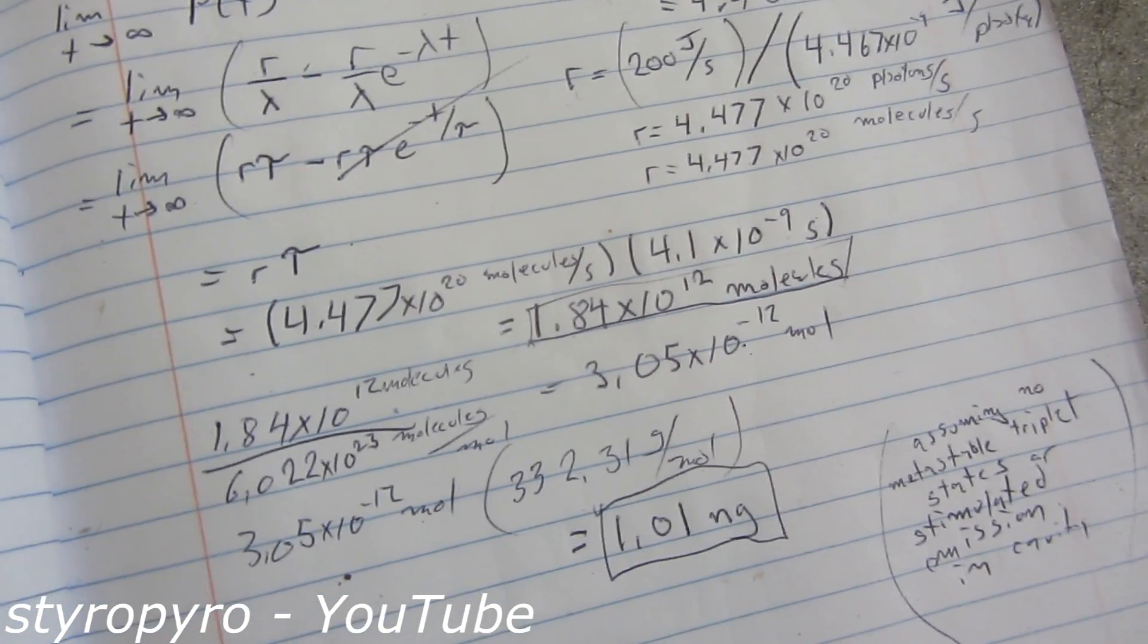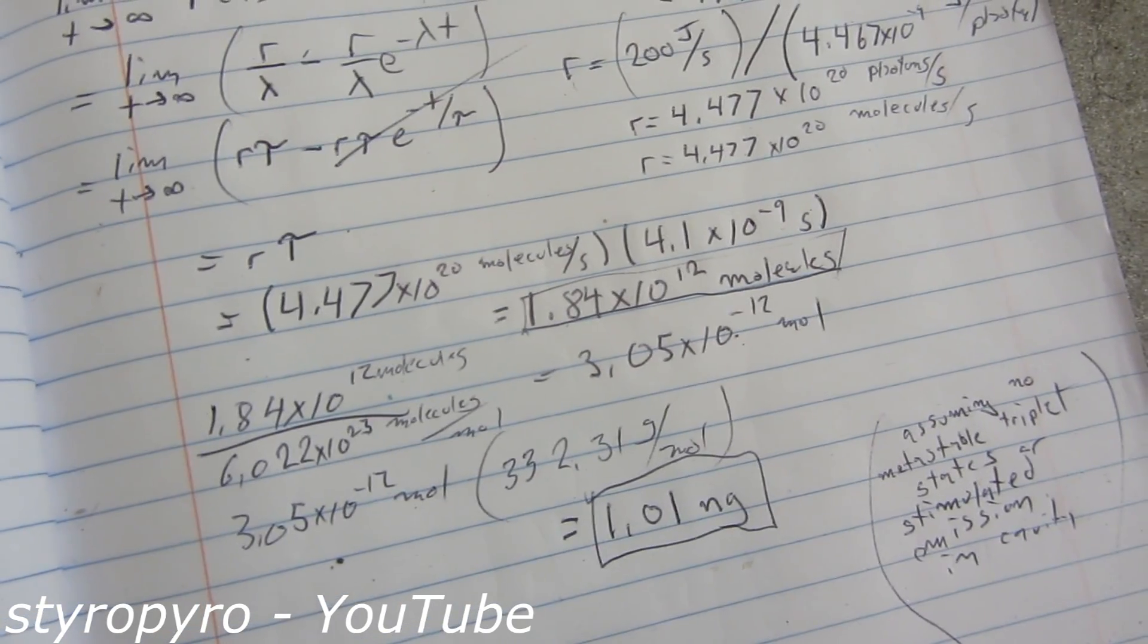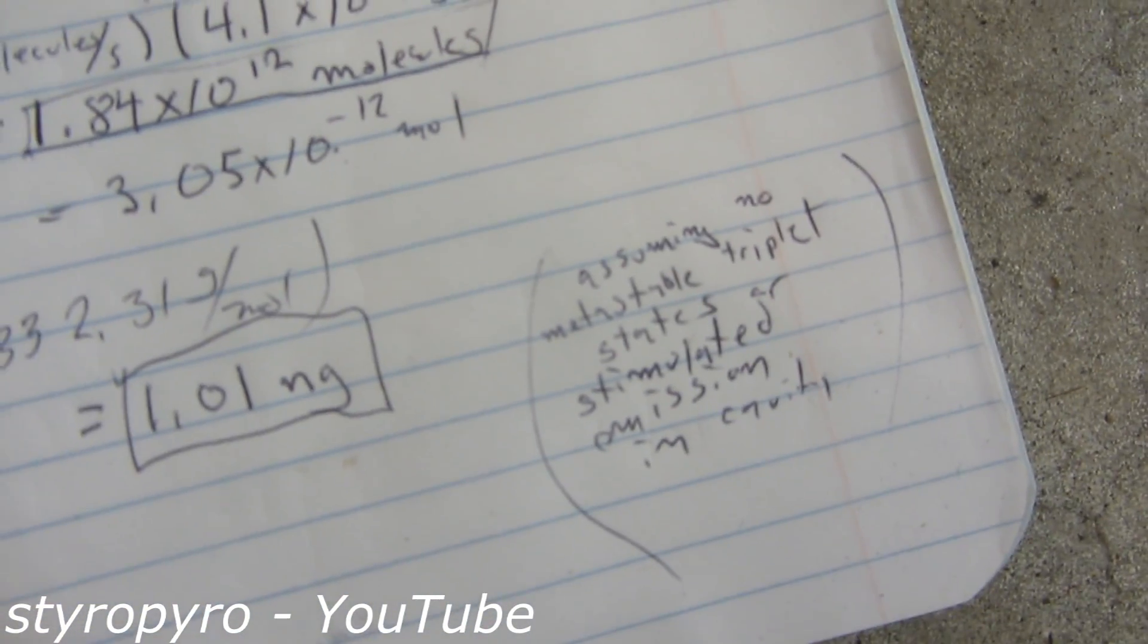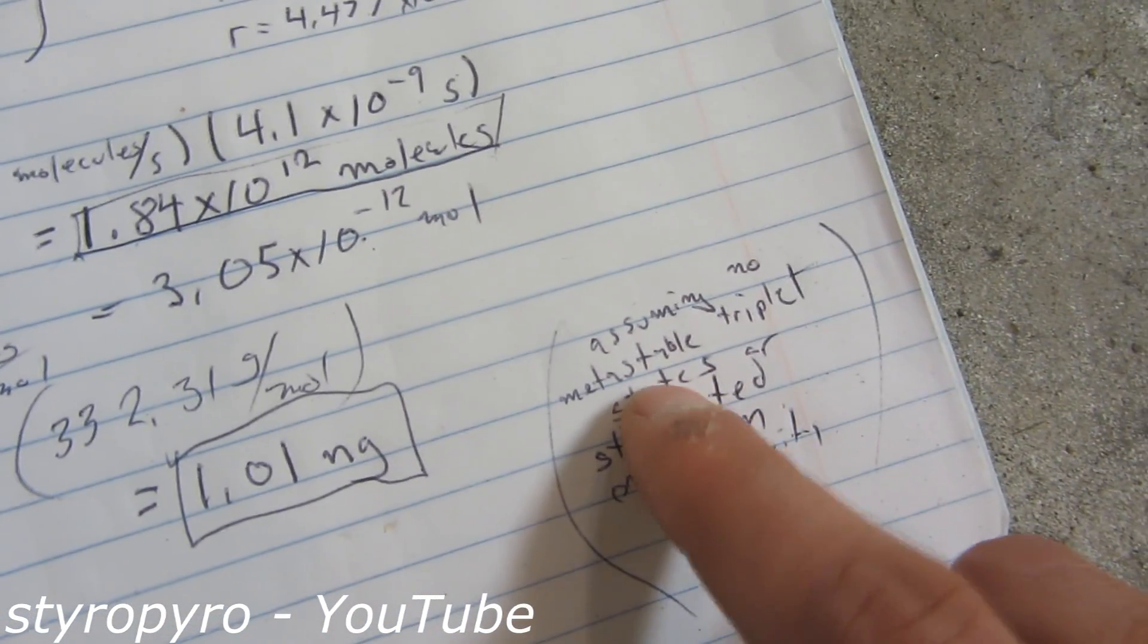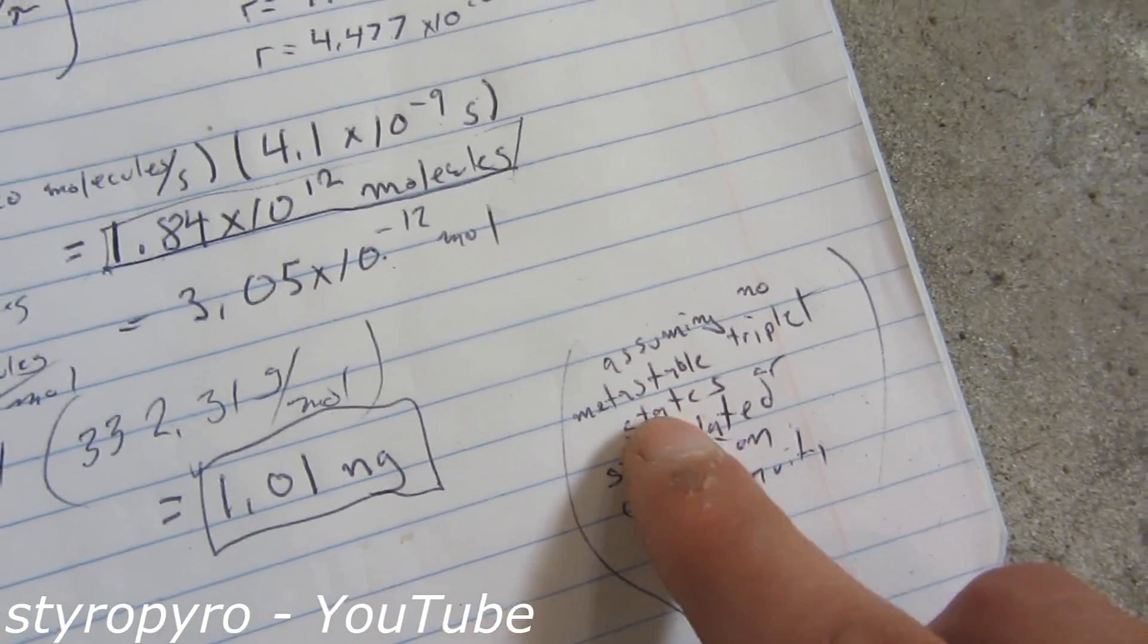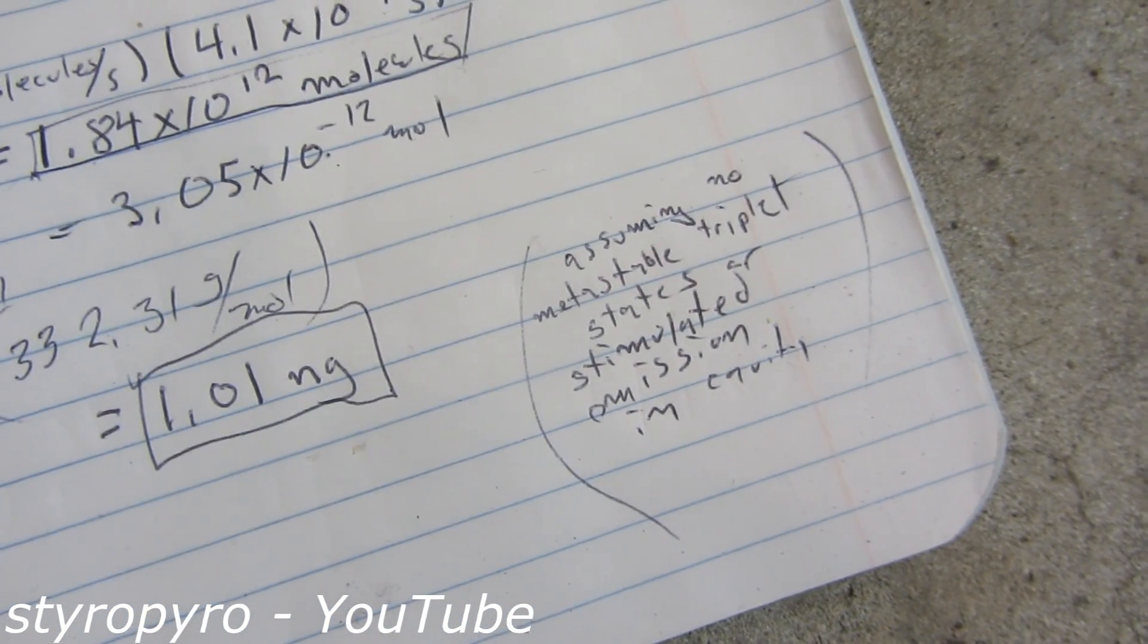And also, there won't be any population inversion in the molecules. So this dye will not be lasing and making coherent light. And then of course, I got to show my approximations and assumptions. So this assumes that the fluorescence doesn't fall into some metastable triplet quantum state after it gets excited, as well as there's no stimulated emission happening in the cavity.